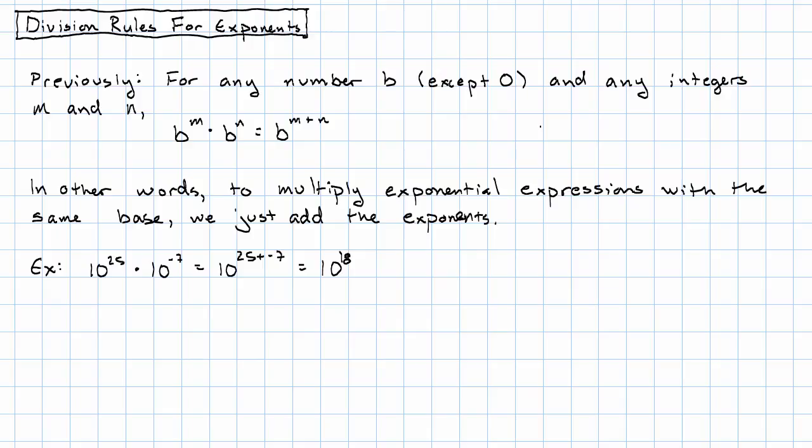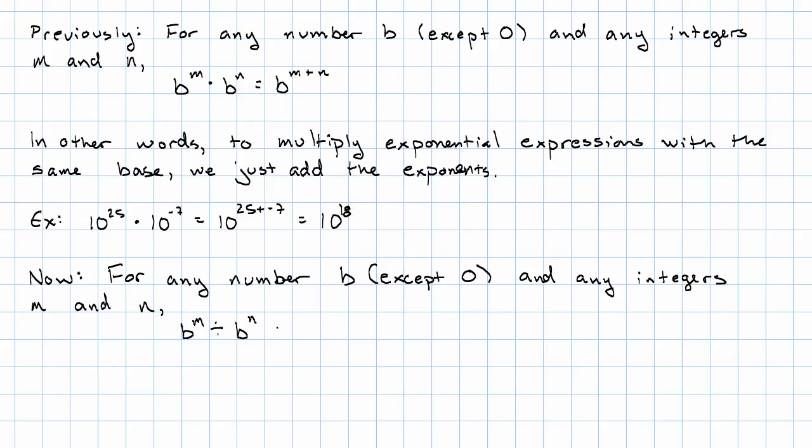All right, so the rule for division is for any number b except zero and any integers m and n, b to the m divided by b to the n, which we can write b to the m over b to the n, is going to be just b to the m minus n. And there are two ways that we can see this.